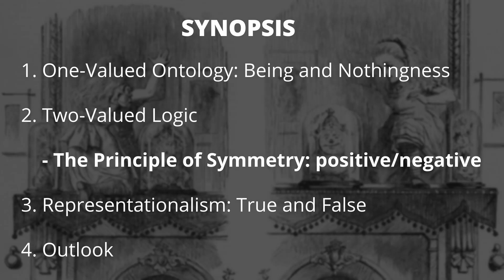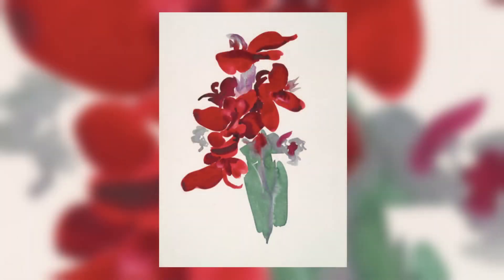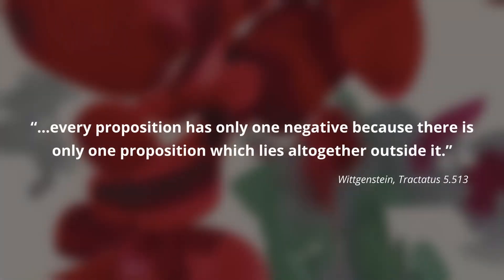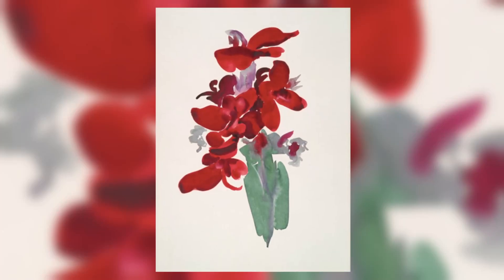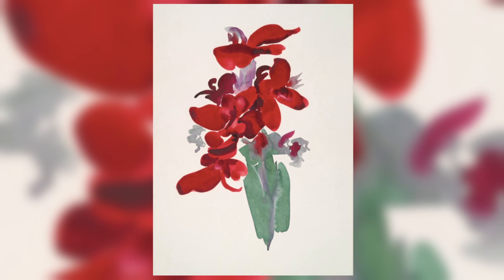Any proposition can either be affirmative or negative: the flower is red, or the flower is not red. On second thought, there seems to be no symmetry here — red only means red, but not red can mean so many things. Yet logicians are undeterred: A and non-A are perfectly symmetrical. This is also what Ludwig Wittgenstein says in statement 5.513 of the Tractatus: every proposition has only one negative because there is only one proposition which lies altogether outside it. If you are not inside the room, you must be outside of it.